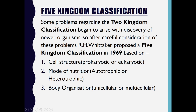Next we come to five kingdom classification. After two kingdom classification came three kingdom and four kingdom classifications, but these classifications had certain points that needed to be reconsidered, as newer organisms were discovered gradually. So the two kingdom classification and related systems had to be reconsidered.